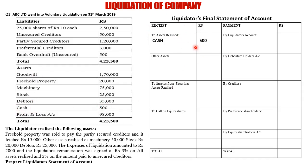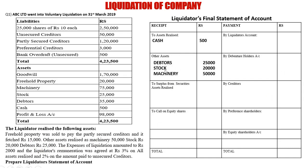Cash is given as Rs. 500, so we note that first. Property was against a liability and will come later. The other assets realized were machinery, stock, and debtors. We note: debtors Rs. 25,000, stock Rs. 20,000, and machinery Rs. 50,000.